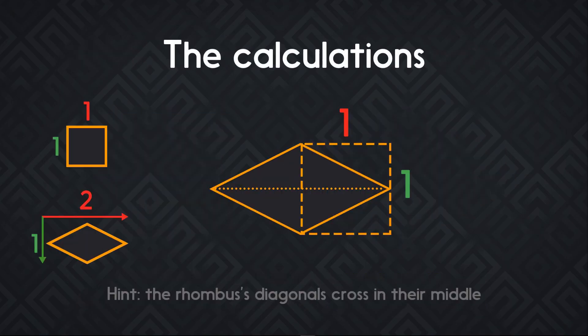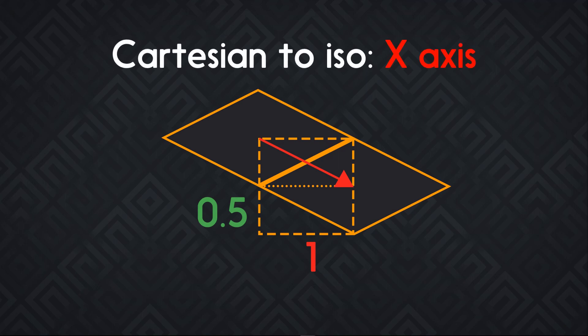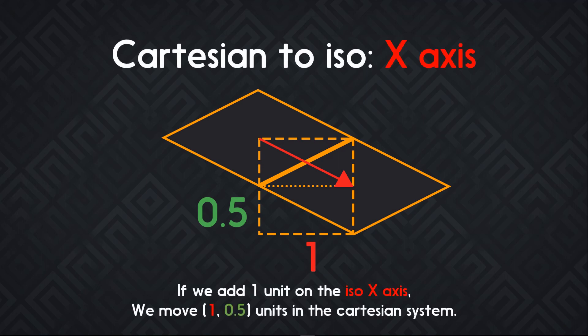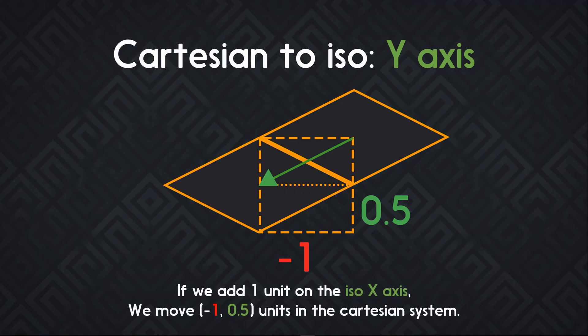Let's talk about the calculations. You can already see why we use that 2-to-1 ratio — it makes it so that with 2 square tiles of equal size, we can cover the isometric tile entirely. To convert Cartesian to isometric coordinates, we look at how much moving on one isometric axis contributes to the screen position. Moving one unit to the right on the isometric X axis moves us one unit right and 0.5 units down in the Cartesian system. Similarly, moving down on the Y axis moves one unit to the left (minus one unit) and 0.5 units down on the Y axis. In other words, when we move one unit on either axis, we add or subtract half the motion on the Y axis.